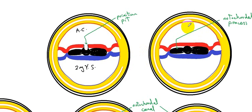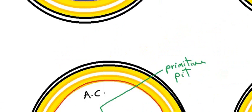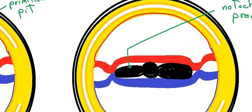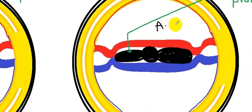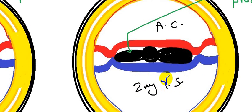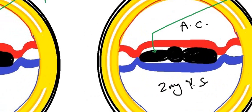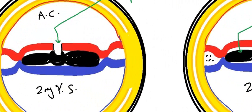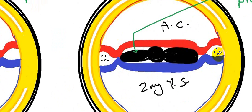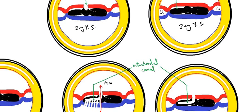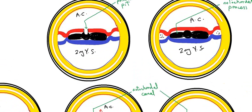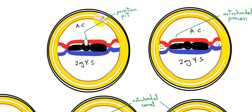Here we have the ectoderm, and this cavity is the amniotic cavity, and this is the secondary yolk sac. And here is the intraembryonic mesoderm. The ectoderm — the overlying ectoderm — will show the primitive pit here.